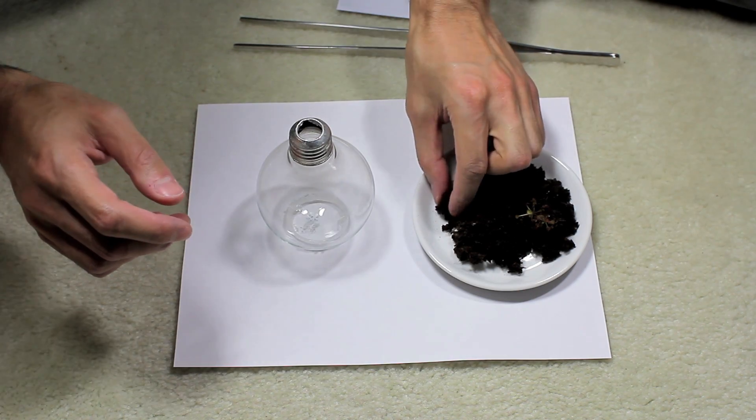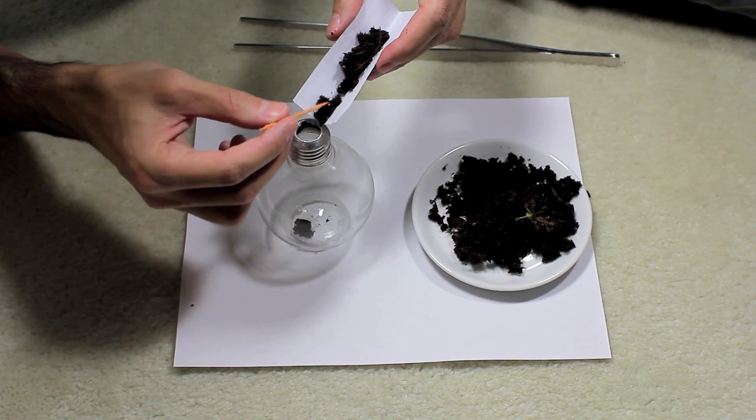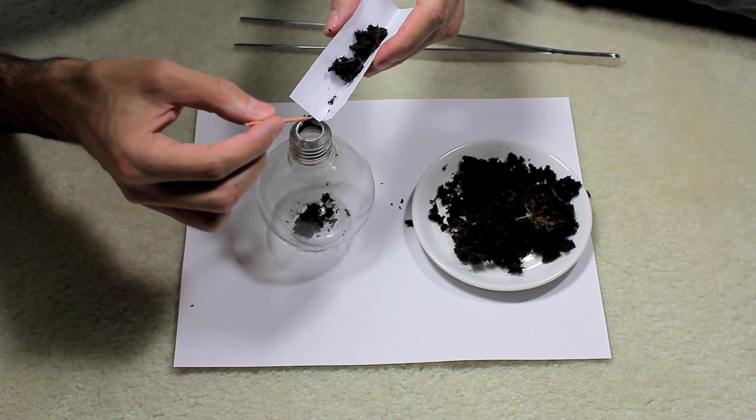Carefully place some sphagnum peat moss inside the terrarium. Folding the card in half and using the toothpick can help shunt some of the moss into the opening.